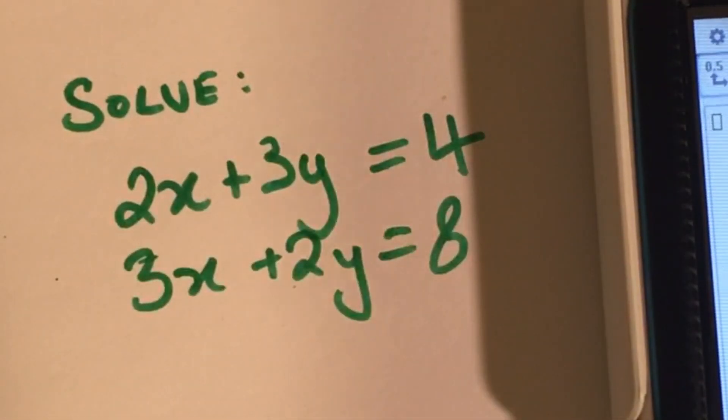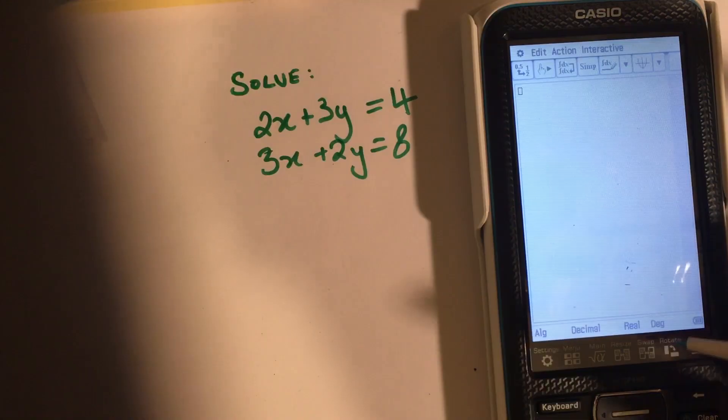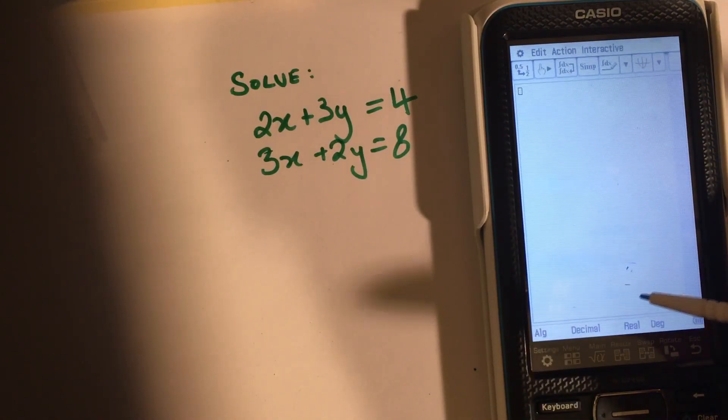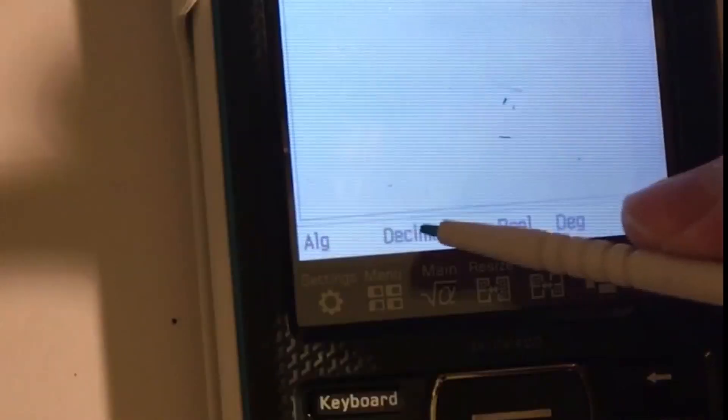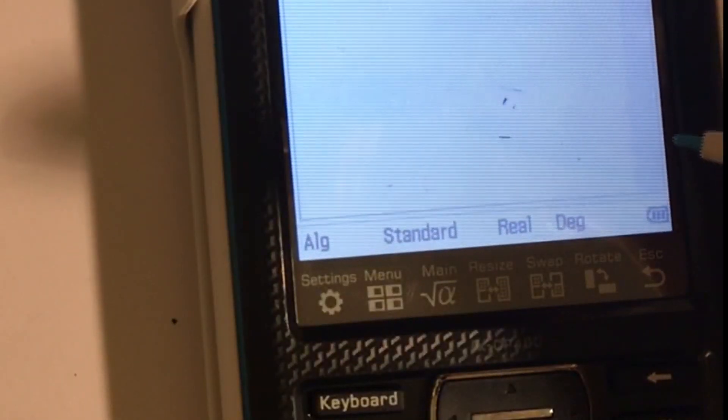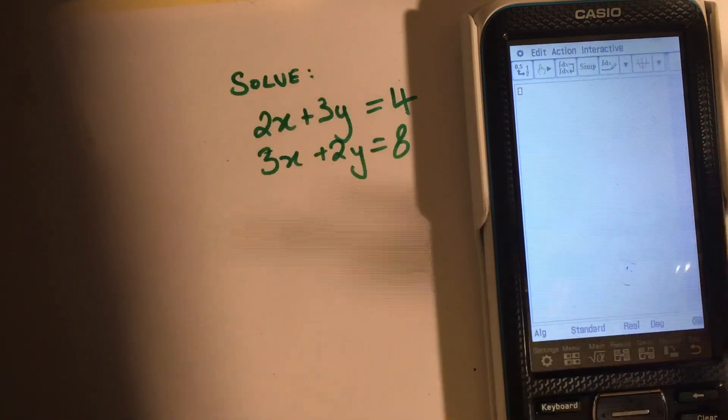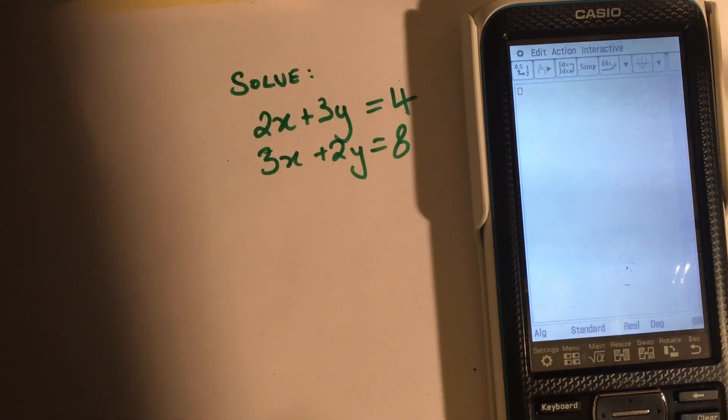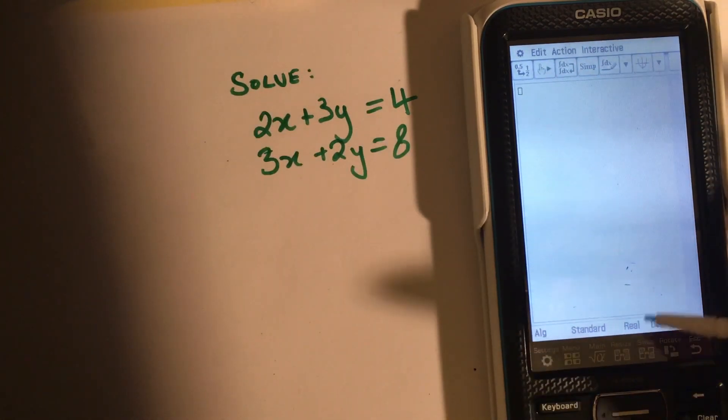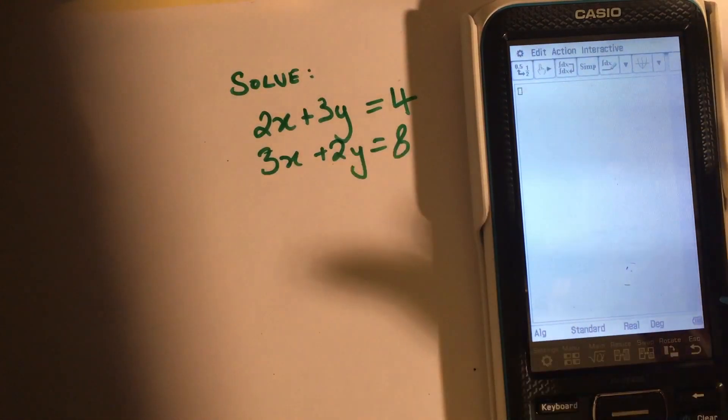I'm going to show you how to solve a simultaneous equation using the calculator. First, make sure that where it says 'decimal' down here, if you click on it, it says 'standard'. Standard gives a real answer in terms of fractions, whereas decimal gives it to a variety of decimal places.